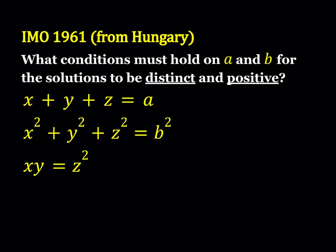We're going to be looking for conditions on A and B. A and B are given numbers, and we want this system to have distinct and positive solutions, which means that X, Y, Z are going to be all different values and they're also going to be positive. At the end we're going to get some conditions in the form of inequalities.